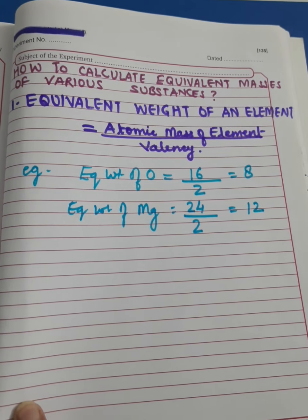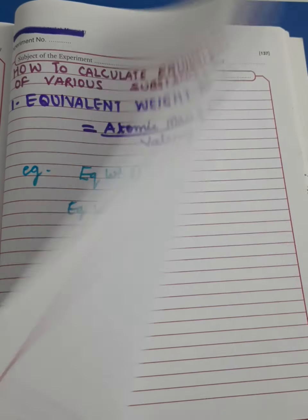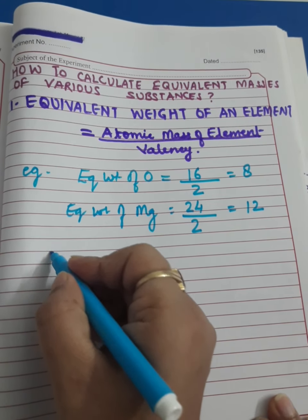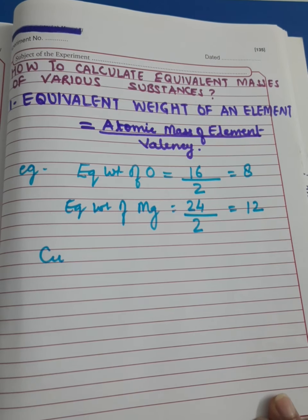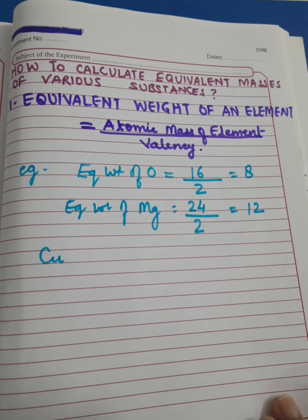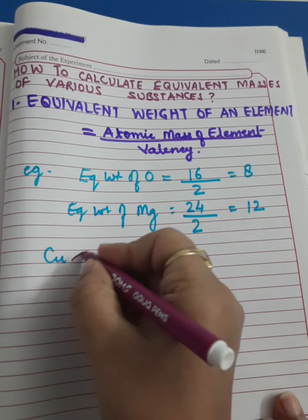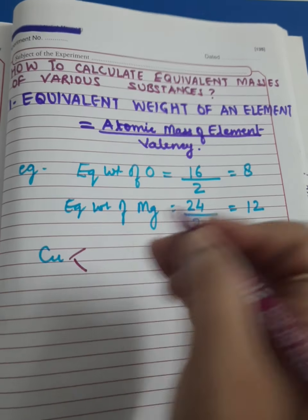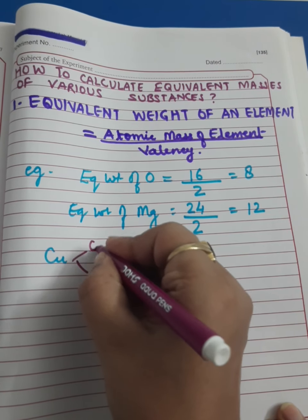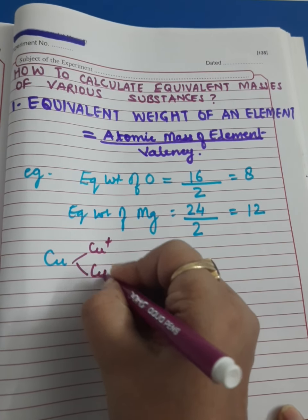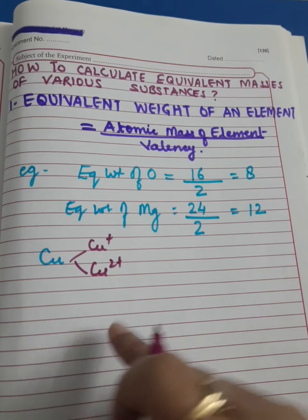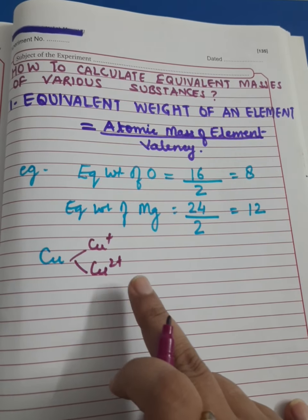Now in the case of elements which exhibit variable valency, like copper — copper is a substance which exhibits variable valency. We know copper exists in 2 forms in different compounds: cuprous Cu⁺ and Cu²⁺. So copper will have variable equivalent weight as well.